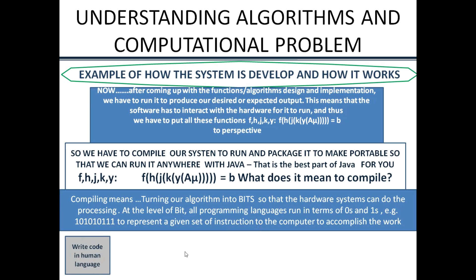The first thing is we write our code in the human language — that is the function we have written. We are writing it in Java, which is user-friendly; you can read all the syntax in Java and understand it. After writing that, we need to compile it. We compile the Java code using a command called javac — the Java compiler. So we have a program written in Java and now we need to compile it.